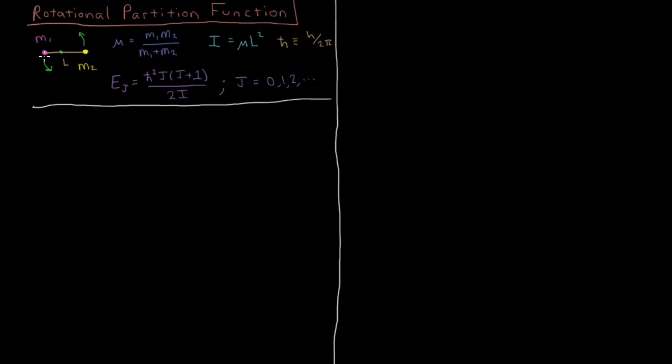So let's pretend we have some diatomic molecule here with mass m1 and mass m2 for the two atoms. They're separated by some bond length L and they're rotating around this center of mass which is somewhere along this bond length vector. The quantities of interest here are the moment of inertia, which equals the reduced mass times the bond length squared. The reduced mass is mass 1 times mass 2 over their sum, mass 1 plus mass 2.